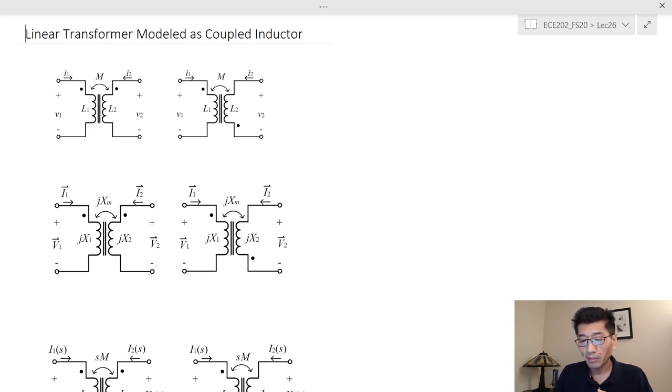So let's see if we have a linear transformer and we model as coupled inductors. We have the self inductors L1 and L2 for the primary winding and the secondary winding respectively and then we have the mutual inductors M. In time domain, everything is a function of time.